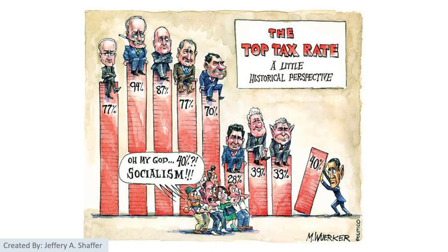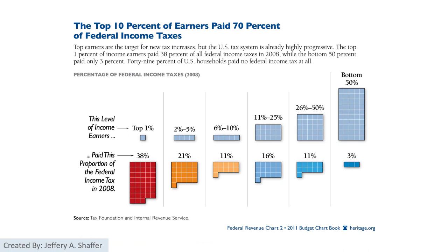Now we can understand a bit better when we see politicians do this. One chart was likely created by the blue team to show how extreme the red team is when discussing the top tax rate — notice all the other presidents are sitting on top of the bars, except Obama, who is pushing up a much smaller bar. Another chart is from the red team discussing the factor that the top 10% of earners paid 20% of all the taxes.